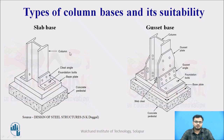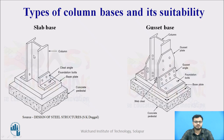There are two types of column bases: slab base and gusset base. Slab base is used for light loads and gusset base is used for heavy loads. The slab base provides uniform bearing pressure, whereas the gusset base does not provide uniform bearing pressure.